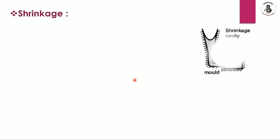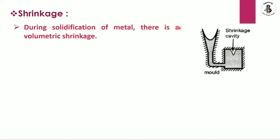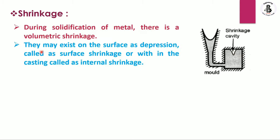The next defect is shrinkage. At higher temperatures metallic materials expand, and during solidification all metal contracts. Due to uneven shrinkage and unidirectional solidification, extra material needs to be supplied from the risers to compensate. Improper riser design is one cause of shrinkage defects. During solidification there is volumetric shrinkage, which may exist on the surface as depressions — called surface shrinkage — or internally, called internal shrinkage.